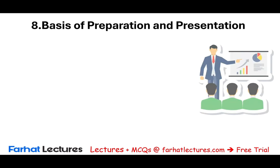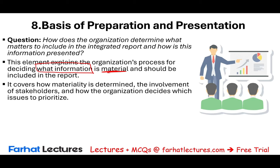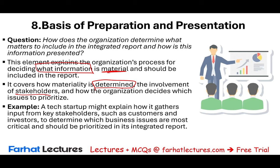The eighth content element is basis of preparation and presentation: how does the organization determine what matters to include in an integrated report and how is this information presented? Here we talk about materiality — what's important, what to include, what not to include. This element explains the organization's process for deciding what information is material. It covers how materiality is determined, the involvement of stakeholders, and how the organization decides which issues to prioritize. For example, a tech startup might gather input from key stakeholders such as customers and investors to determine which business issues are most critical.